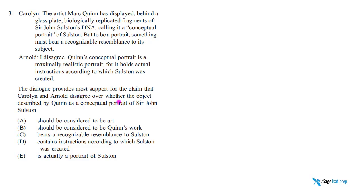We call this a disagreement, point-and-issue disagreement question. The key word here — once you get good enough at this, you don't really waste a lot of time reading. You just see 'disagreement.'